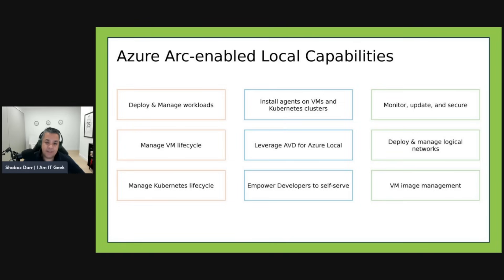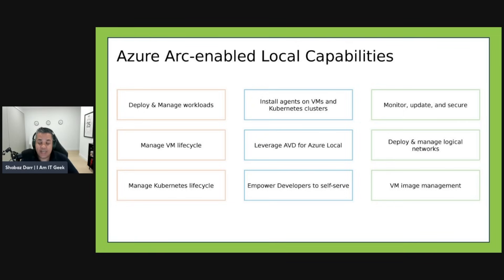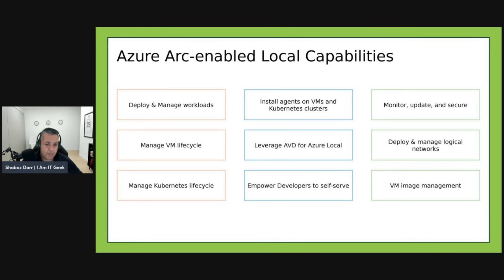Then we have Azure Local capabilities. Azure Local — what used to be Azure Stack HCI — is a hyper-converged infrastructure solution delivered as an Azure service. It's a hybrid solution designed to host virtual Windows and Linux VMs or containerized workloads and their storage. Azure Local is a hybrid product offered under validated hardware as well. It connects on-premises estate to Azure, enabling those cloud services.